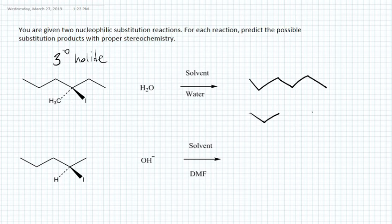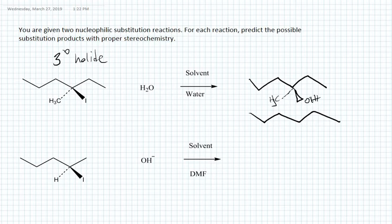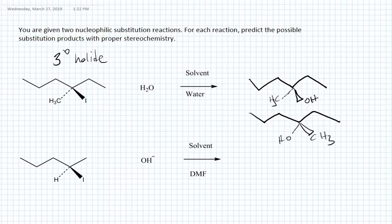We will form a racemic mixture of the alcohol. The two enantiomers are drawn: one with the methyl group at the back and the nucleophile added from the front, and the second as its mirror image with the groups switched. We get both alcohol enantiomers as a racemic mixture because this is an SN1 reaction.